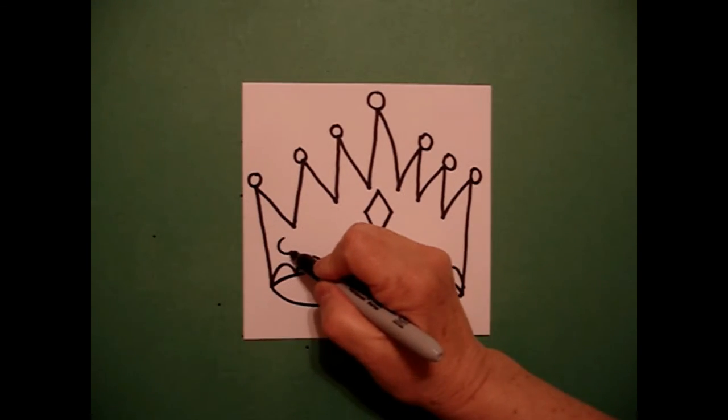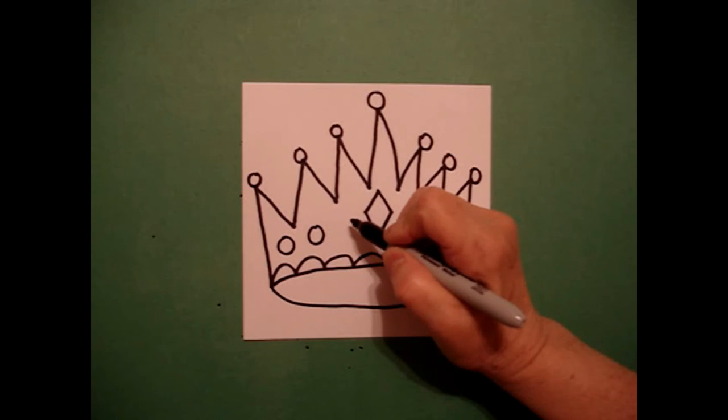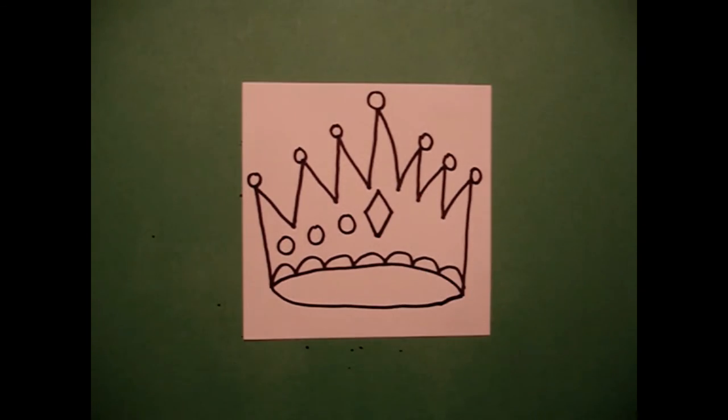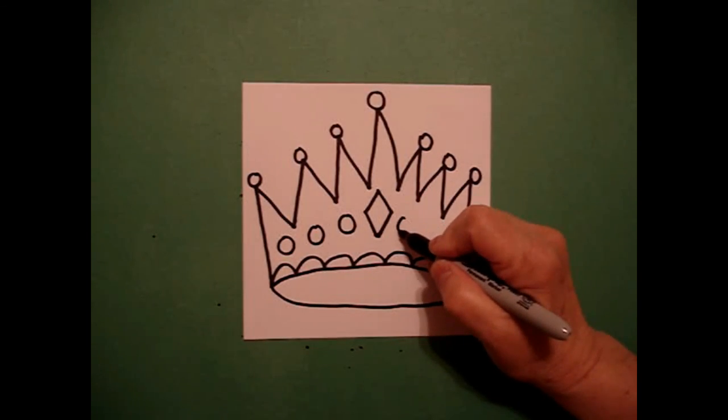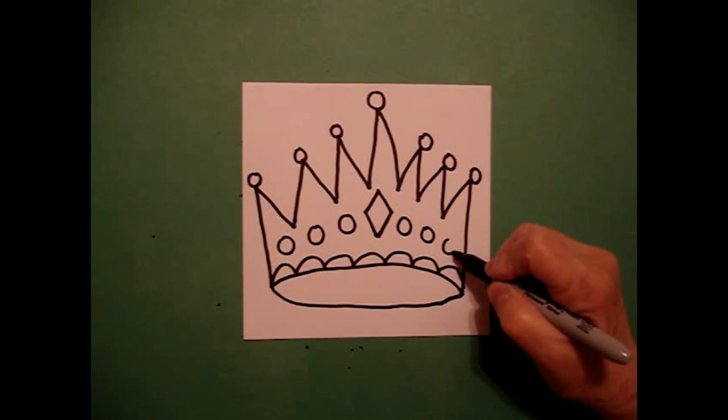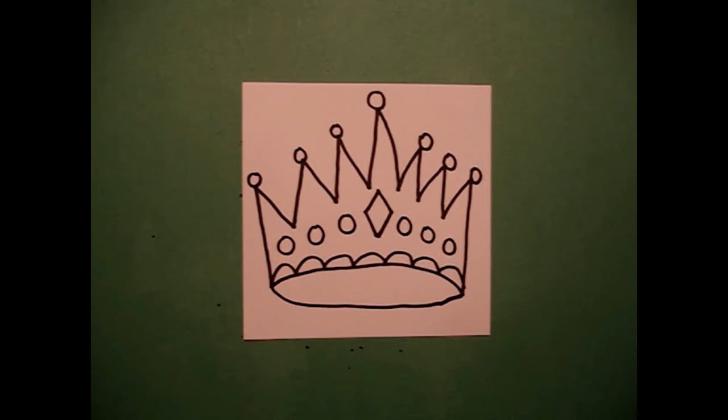Now I'm going to add one, two, three baby circles, jump over, one, two, three baby circles on the right.